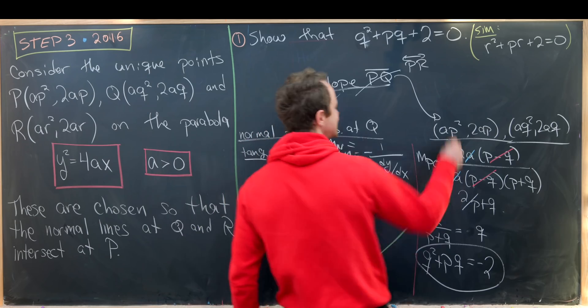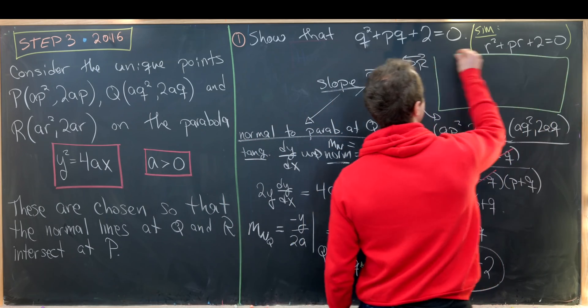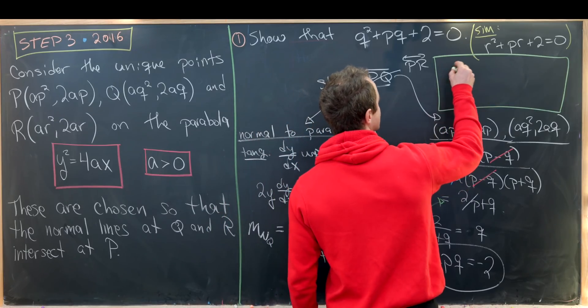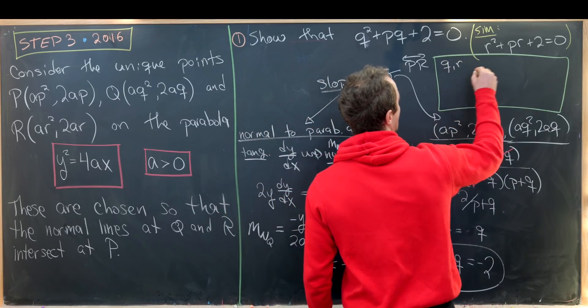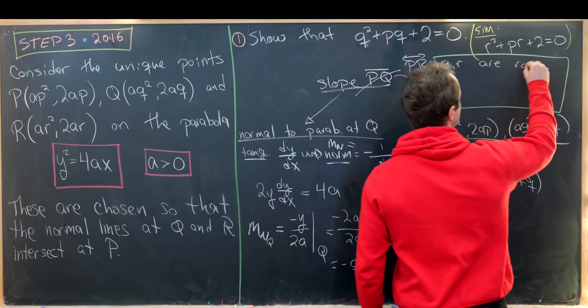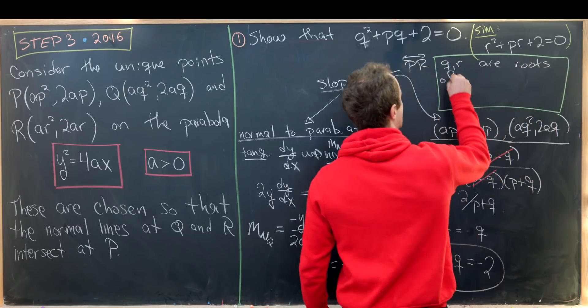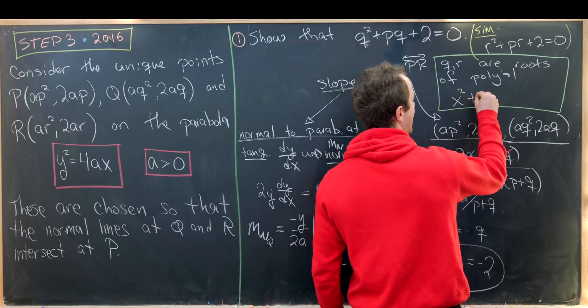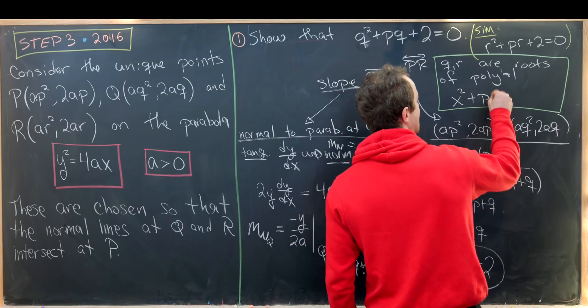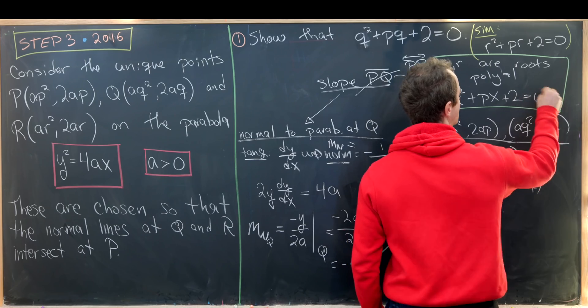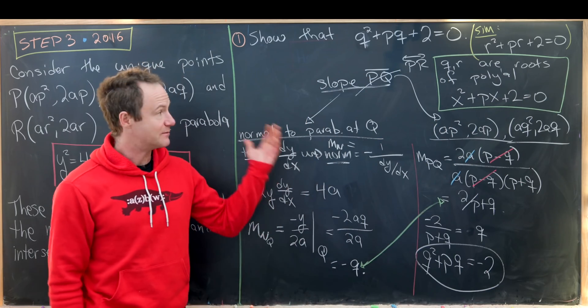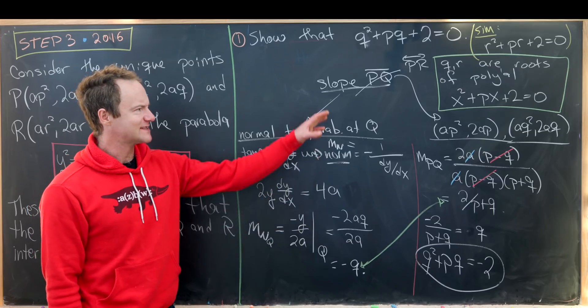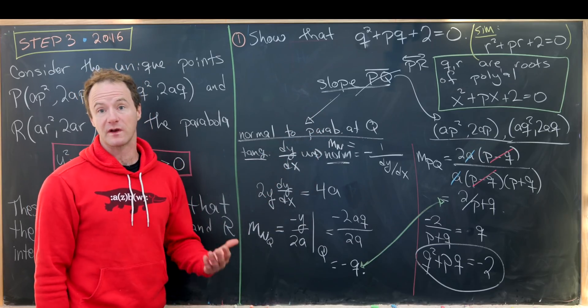Let's notice that this actually gives us something quite a bit stronger and that is the numbers Q and R are roots of the polynomial x² + Px + 2 = 0 because they both satisfy that quadratic equation. And that's actually something that we'll keep in mind for one of the further steps.